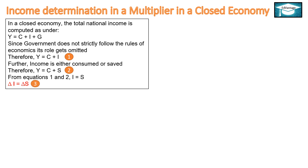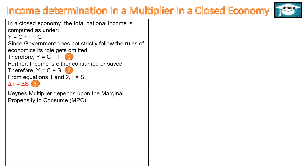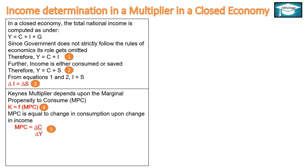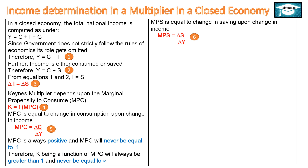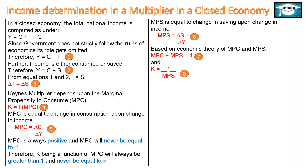Change in Investments would be equal to Change in Savings. Keynes' Multiplier depends upon the Marginal Propensity to Consume (MPC). K, that is the Multiplier, is a function of MPC. MPC equals Change in Consumption upon Change in Income. MPC is always positive and MPC will never be equal to 1. Therefore, K being a function of MPC will always be greater than 1 and never equal to Infinity. MPS equals Change in Saving upon Change in Income. Based on economic theory, MPC plus MPS equals 1, and K is the reciprocal of MPS.